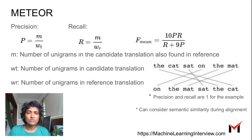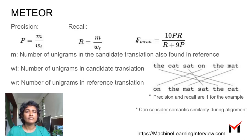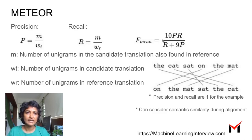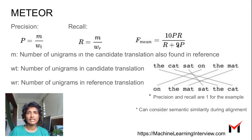The score combining precision and recall is the F-score — the harmonic mean of precision and recall — but it gives more weightage to recall. You see 'R + 9P' in the denominator, which means recall is weighted more heavily than precision.